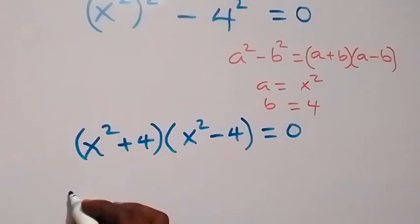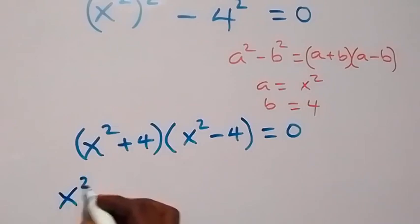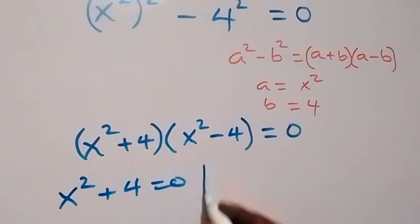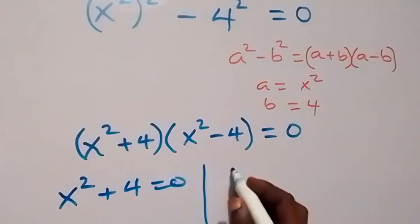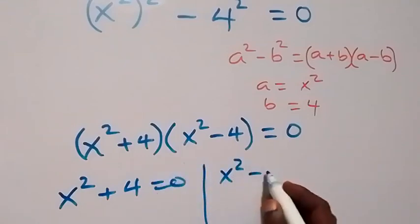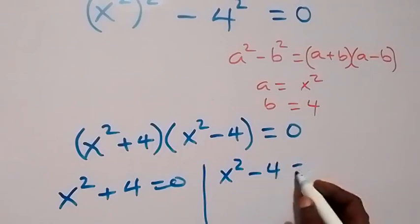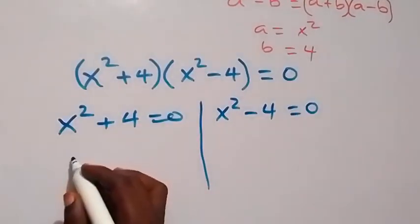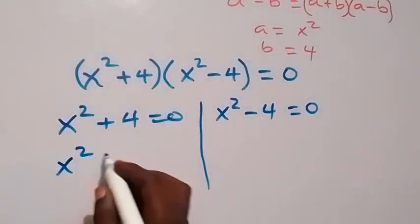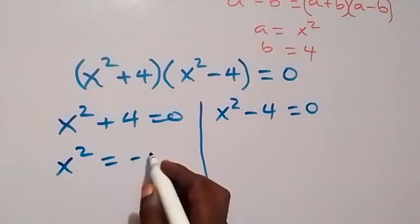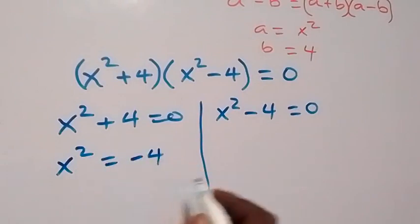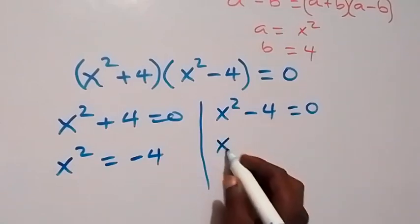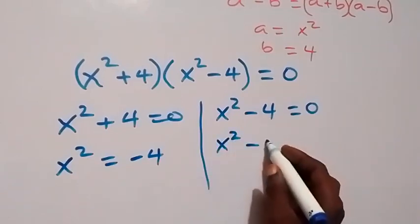From here we get two possible cases. We have x squared plus 4 equals zero, and we have x squared minus 4 equals zero. On one side we get x squared equals negative 4.